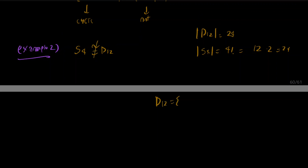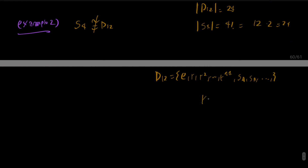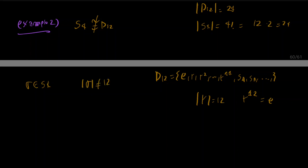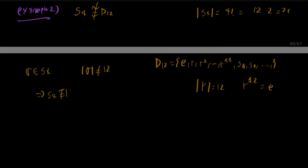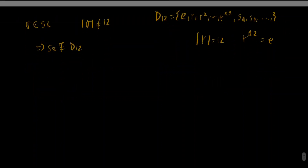Recall the elements of D12: we have the identity, rotations r, r², ..., r¹¹, and all the reflections. The order of r is 12. On the other hand, for permutations in S4, you cannot have an element of order 12. You can see this using the fact that the order of a permutation is the LCM of the lengths of its disjoint cycles. From this we deduce the two groups are not isomorphic.